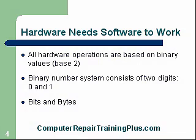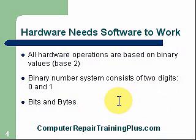All hardware operations are based on binary values. This is what we call a base-two numbering system — we just have two characters, a zero and a one. With zero and one, we can represent all of the information you see on your screen and all the information communicated through data lines from computer to computer throughout the entire internet. The binary number system consists of two digits: a zero and a one. What we call bits is just a zero or a one — a byte would be eight of those characters.